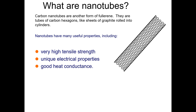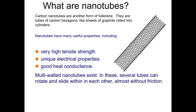Carbon nanotubes are also good heat conductors - they can easily conduct heat from one place to another. You can have multi-walled nanotubes where several tubes can rotate and slide within each other almost without friction. Unlike bulk materials where rotating one inside another causes a lot of friction, in the case of carbon nanotubes you can easily rotate them within each other without any friction.